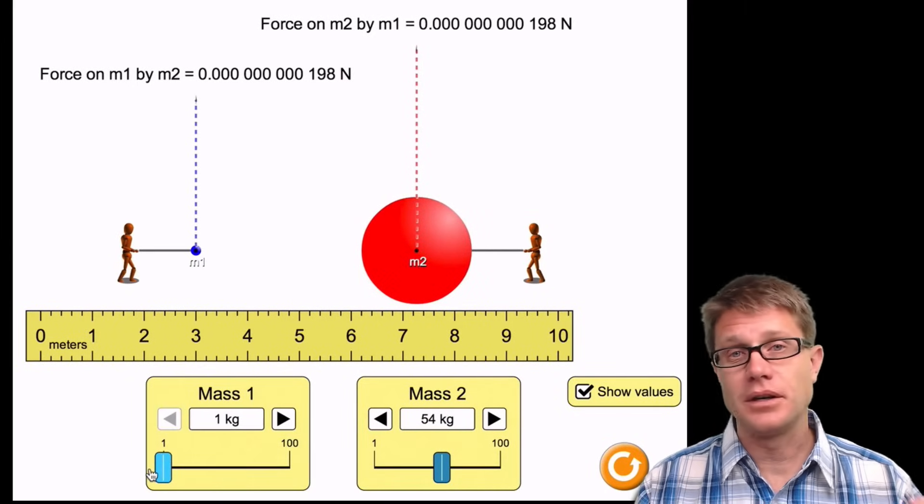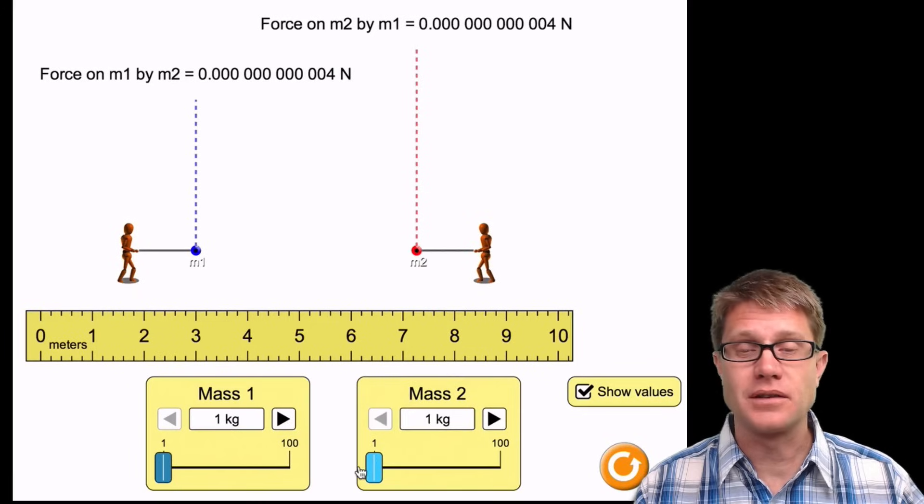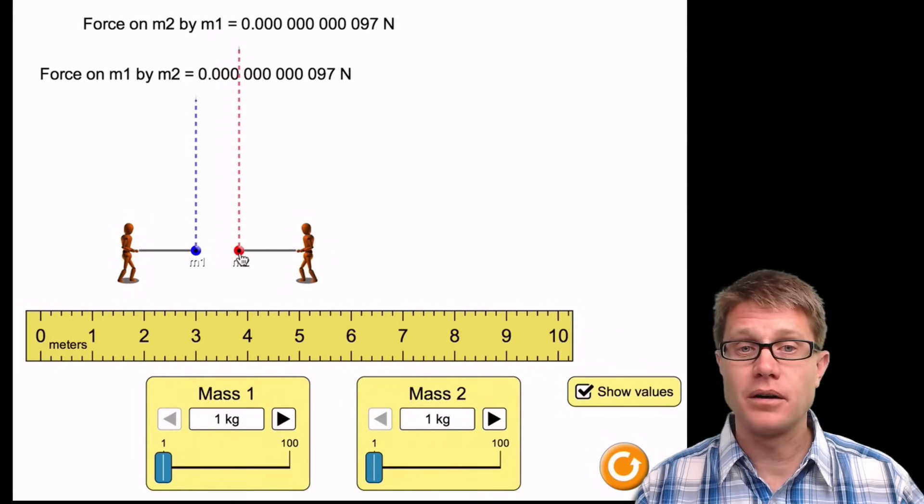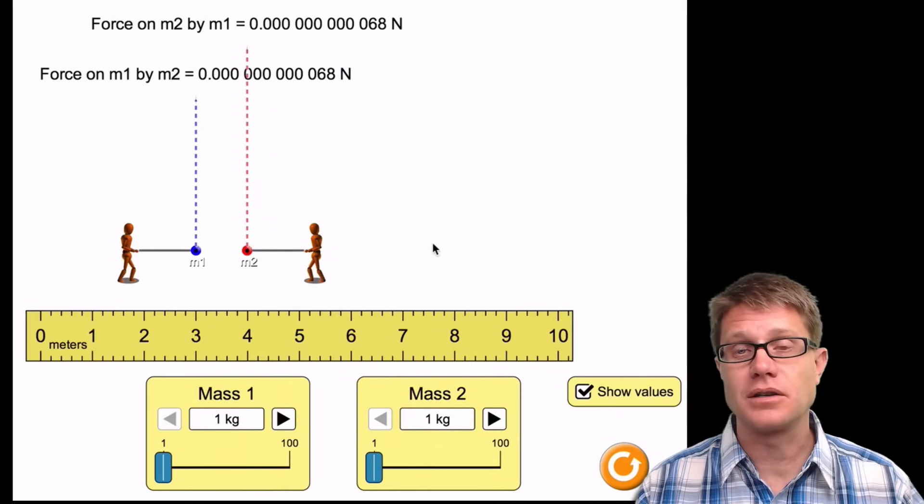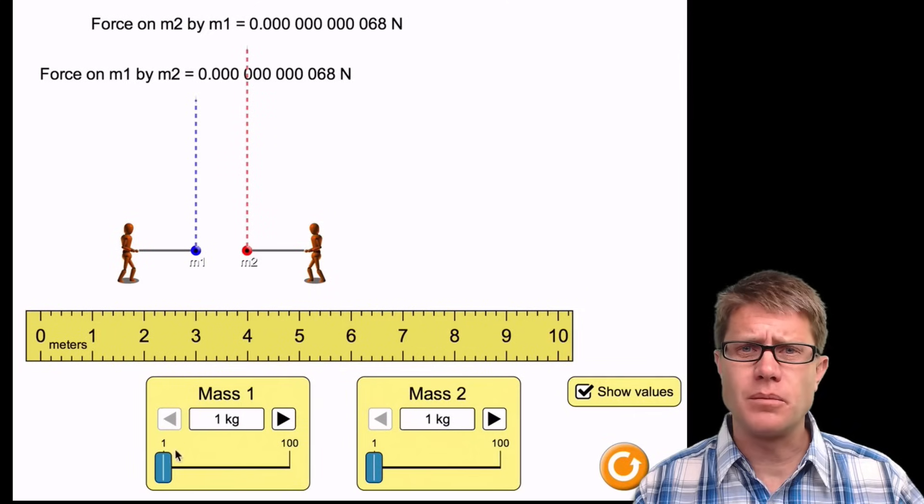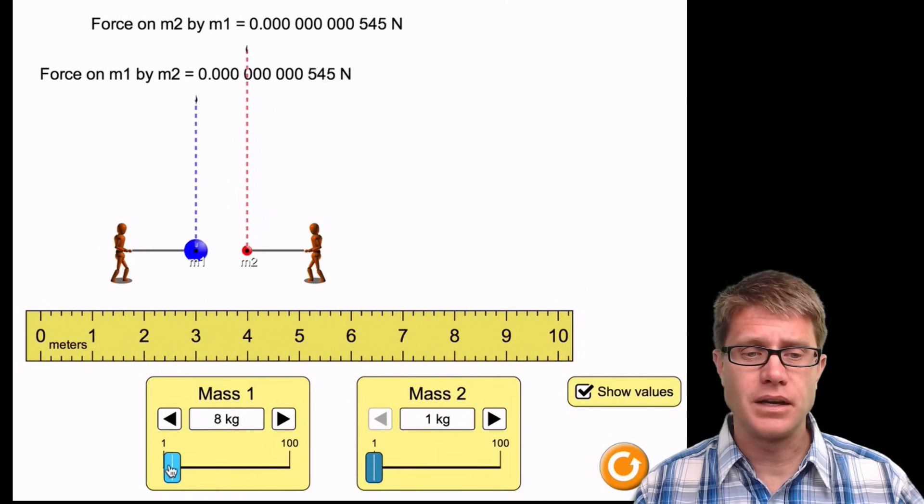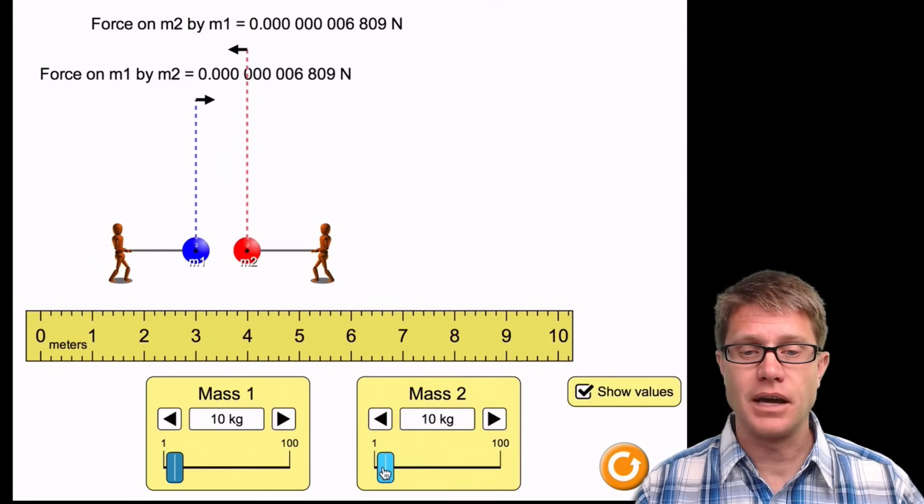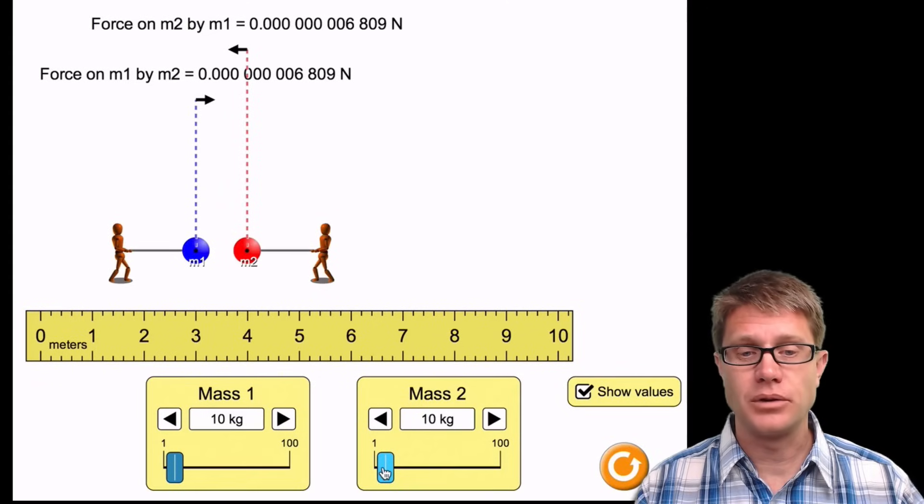And we can start to do some actual analysis here. If we make both of their masses 1 to make the numbers easy, and then we move them 1 meter apart, you start to see that gravitational constant come out. It is a really small value. What happens now if we increase the mass tenfold? So if I increase this to 10 kilograms, you can see the force increases by 10. What if I increase this mass by 10? We also see a tenfold increase.